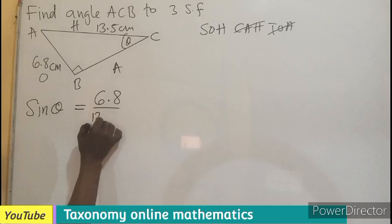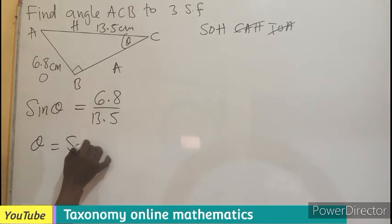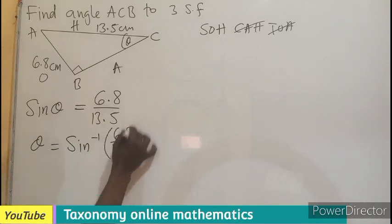But don't forget we are looking for the angle. So the angle will be equal to the sine inverse of 6.8 divided by 13.5.